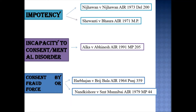Coming to the fourth ground: pre-marriage pregnancy. It is given in Section 12, clause (d), that the respondent was at the time of marriage pregnant by someone other than the petitioner. The essentials are: the respondent was pregnant at the time of marriage and pregnant from another person; the petitioner was not aware of such pregnancy at the time of marriage; the petition was filed within one year of the marriage; and there was no marital intercourse with the consent of the petitioner after knowing of such pregnancy.